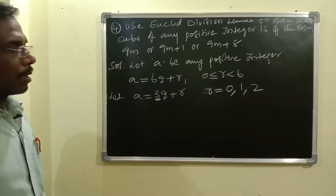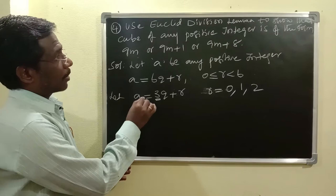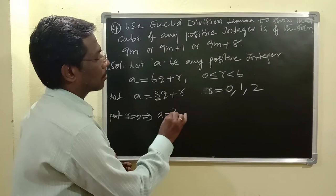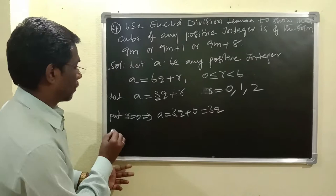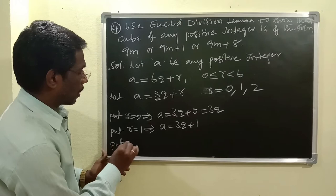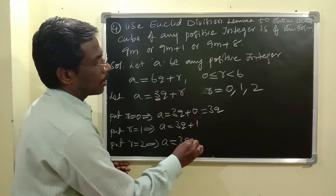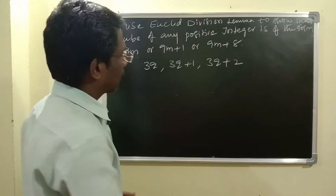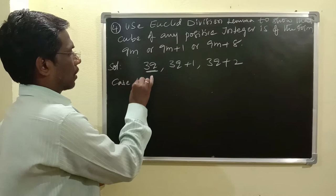Now I am going to substitute R values in the equation of Euclid's Division Lemma. Put R equals 0: A equals 3Q plus 0, that is 3Q. So we are having three cases: 3Q, 3Q plus 1, and 3Q plus 2. First I do case 1, which is 3Q.